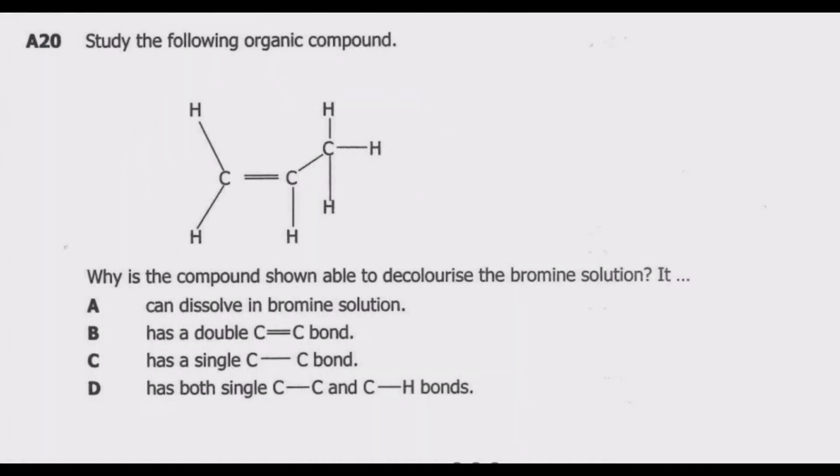Question A20: For the following organic compound shown, why is the compound able to decolorize the bromine solution? Options are: A, can dissolve in bromine solution; B, has a double carbon bond; C, has a single carbon bond; D, has both single carbon and single carbon hydrogen bonds. The correct answer is B, because of the double bond.